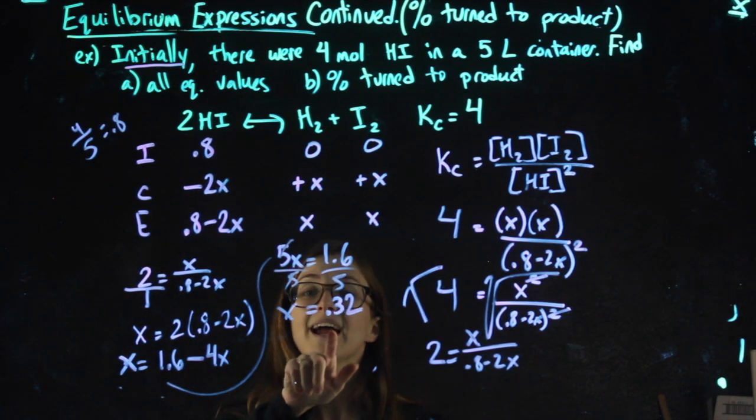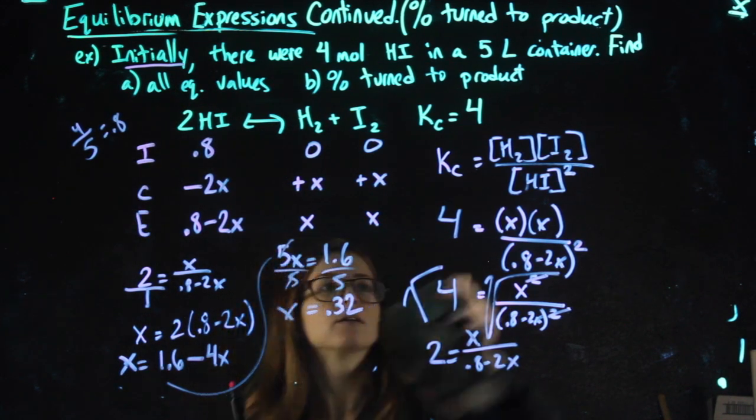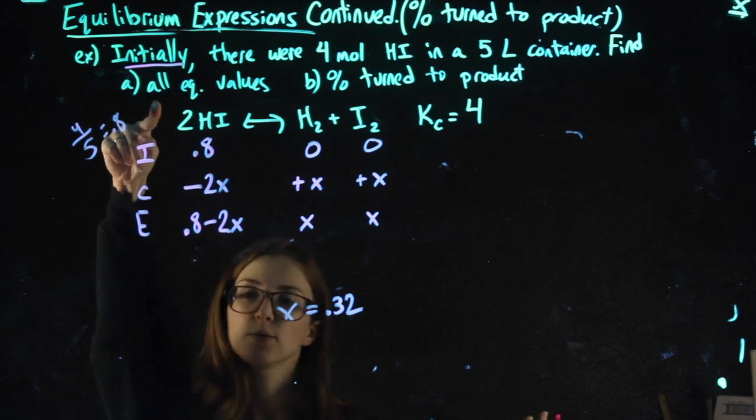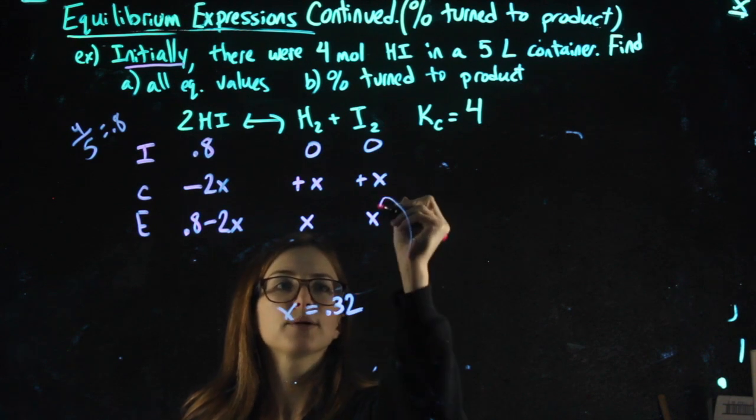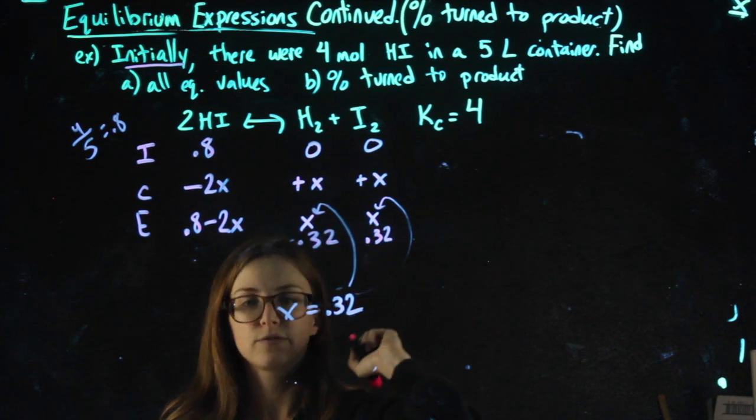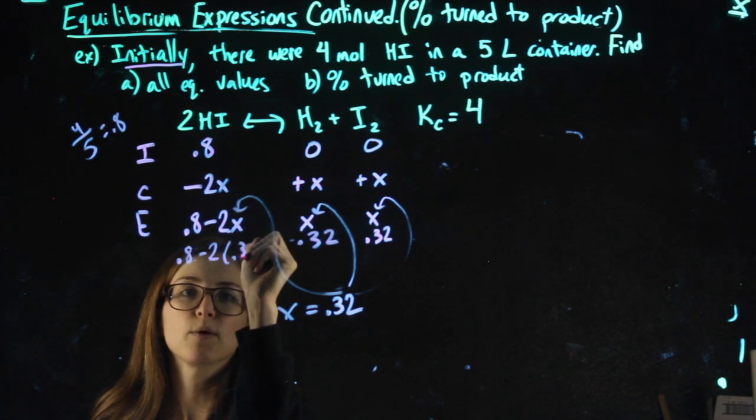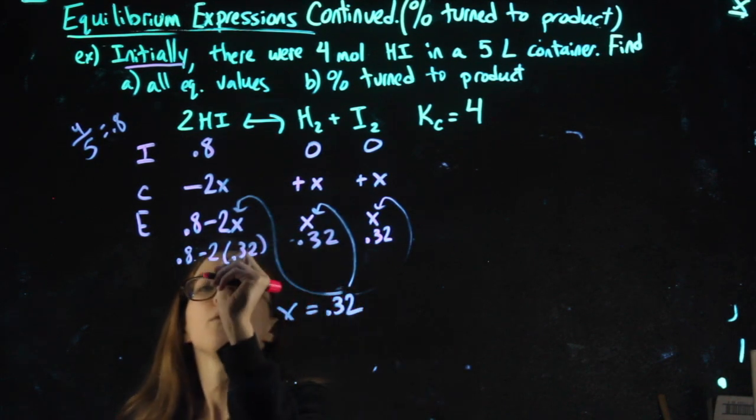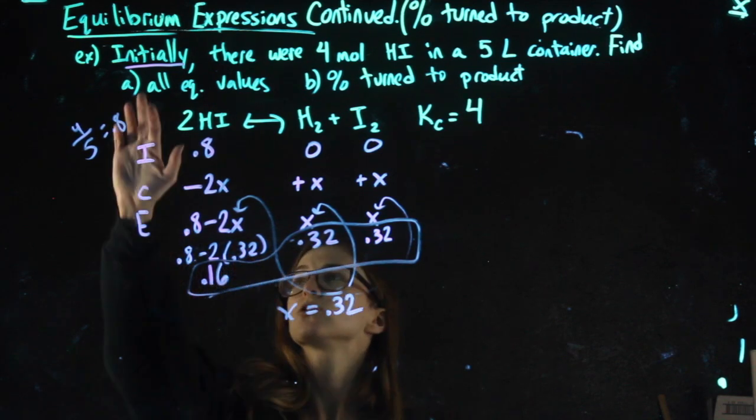If you need to pause, rewind, or rewatch that for how I fill out the ICE chart and found X, once I have X I can go and answer those two questions. So I'm going to erase this. I know my X value is 0.32. The first thing they want are all the equilibrium values, or the equilibrium concentrations, meaning I want to know what these answers actually are. Plugging 0.32 in here, I get 0.32 for I2, 0.32 for H2, and in my calculator to figure this one out I would do 0.8 minus 2 times 0.32, which gets me 0.16. So 0.16, 0.32, and 0.32—those are my answers for part A.